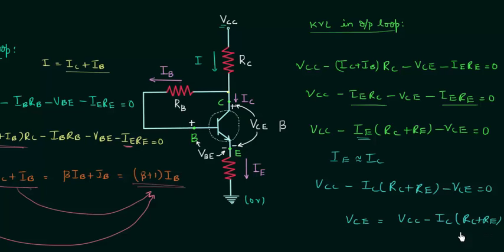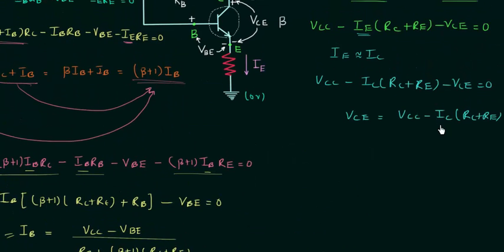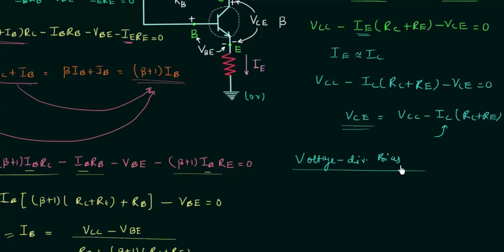So finally, VCE equals VCC minus IC·(RC + RE). This is the final expression for VCE, the output voltage. With the expression for IC already derived, we can calculate IC and then substitute into this expression to get VCE — giving us the operating point. In the next lecture we will discuss voltage divider bias, the most important biasing scheme, which uses Thevenin's theorem — so it is good to revise that before watching.